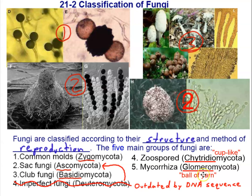The hyphae that look like a ball of yarn can also be referred to as a mycelium, because a mycelium is a tangled mat of hyphae. They're also known as haustoria — specialized hyphae for growing on and into the roots.